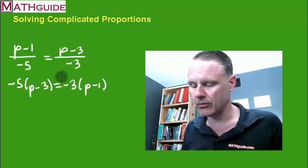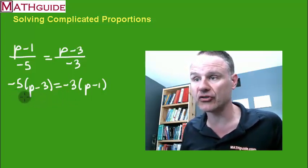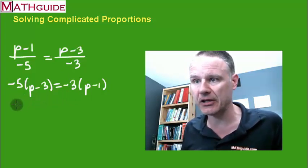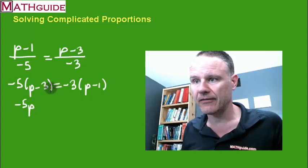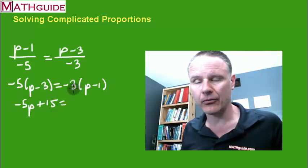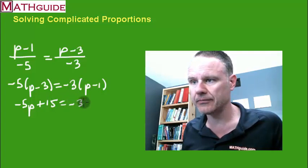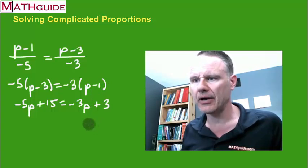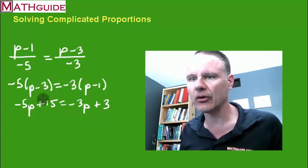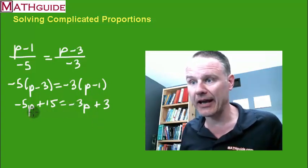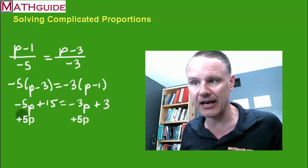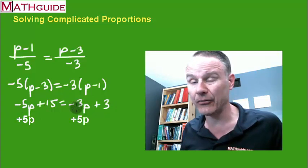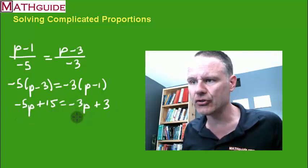Okay so what do we do? Well algebra. We're going to do the distributive property. So negative 5 times p. Negative 5 times negative 3. We're going to take negative 3 times p. Negative 3 times 1. Alright well let's deal with this one just like we did the last one. Let's add 5p to both sides to get rid of this negative 5p. So 5p plus negative 3p is 2p.